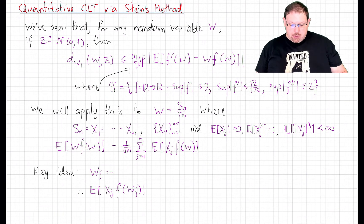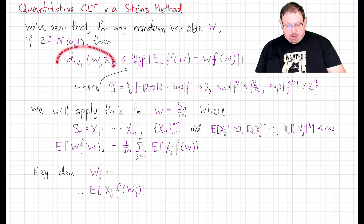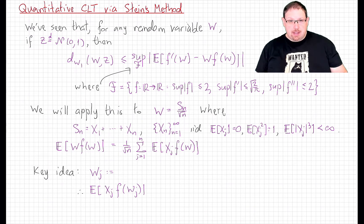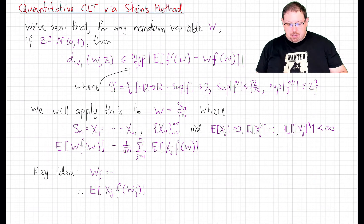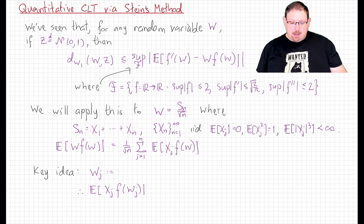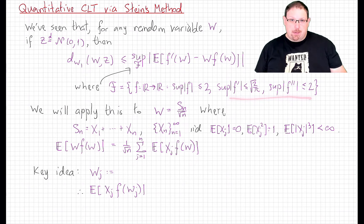Stein's clever idea was to show this is true by writing the Wasserstein distance as a supremum over all Lip-1 functions h of E[h(w) - h(z)], and then writing that difference h(w) - h(z) in a specific form for some function f. That sets up an ordinary differential equation for f, which can be solved and has a unique bounded solution satisfying the required bounds on its derivatives.